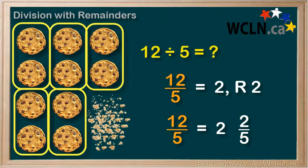That is, each friend gets two whole cookies and we still have to divide the two broken cookies among our five friends. So we still have to divide those pieces by five.